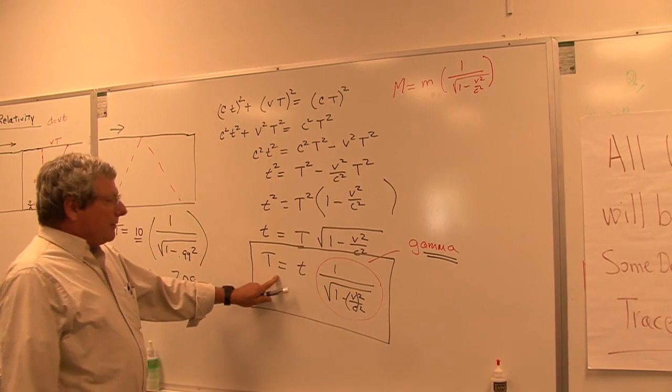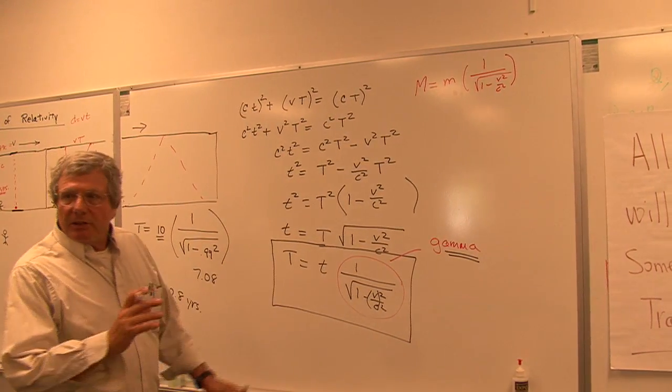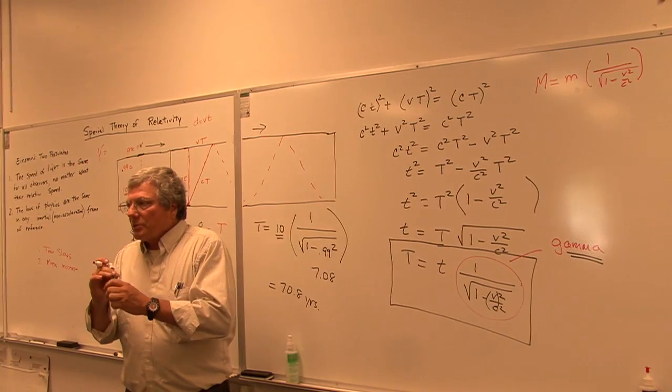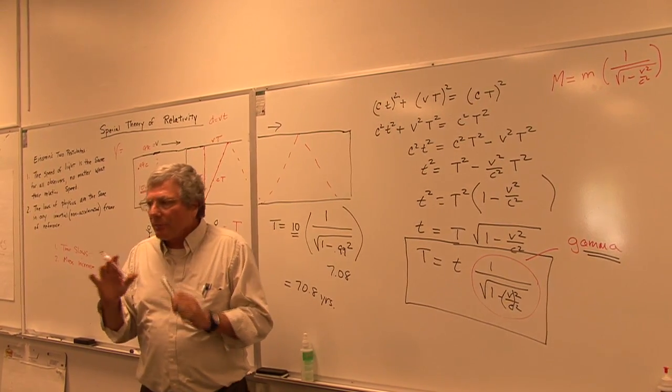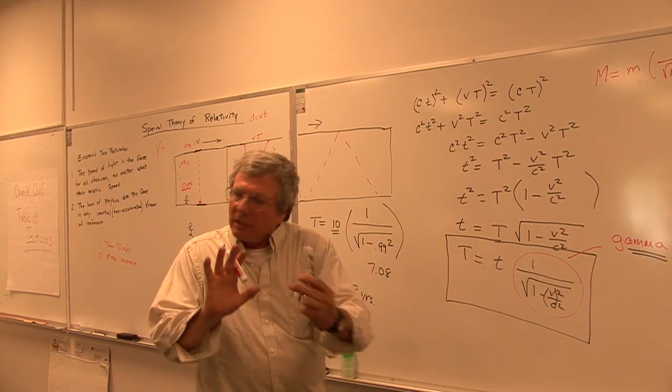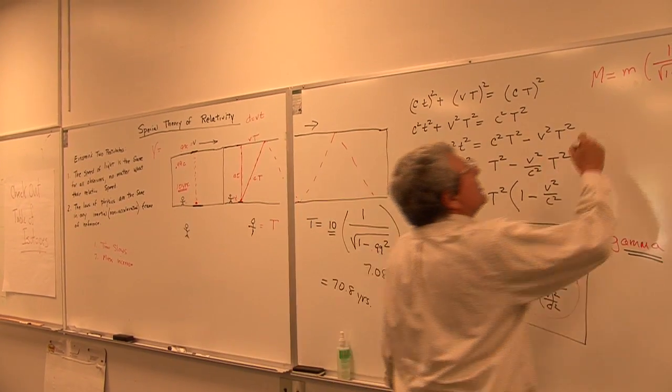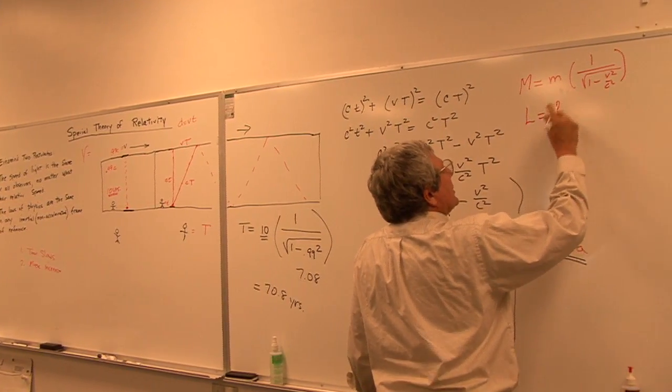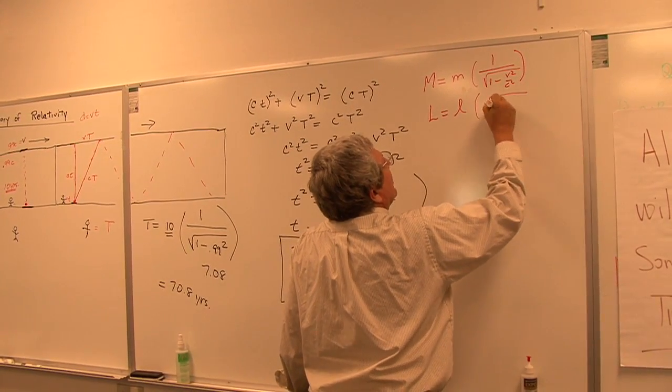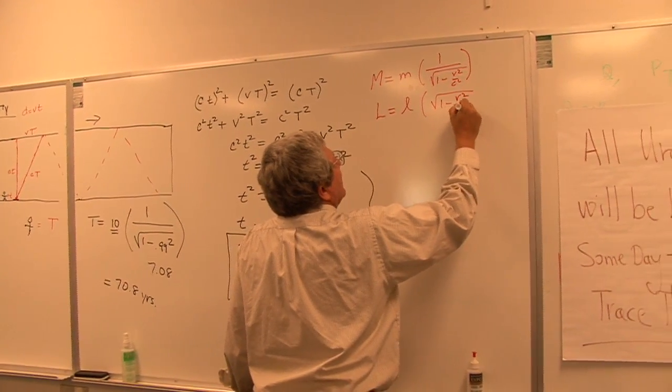So we already have this equation for time, and it ends up that the length of objects contract. This was the problem of the Michelson-Morley experiment, if anybody's familiar with that, that one of the arms actually contracted. And there the equation is, the length is going to equal the original length times just one minus v squared over c squared.